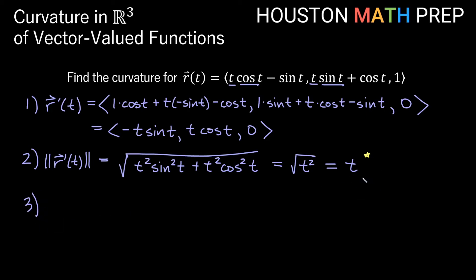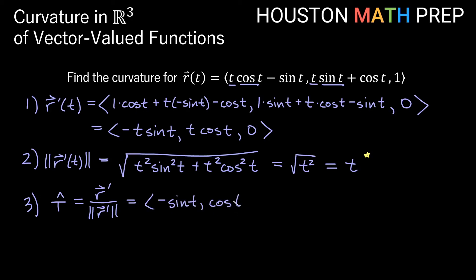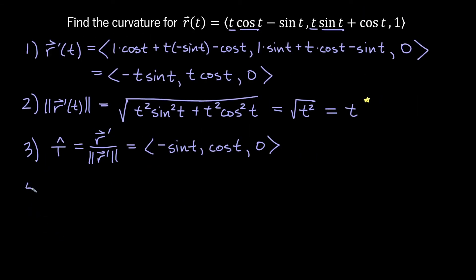If we were allowing t to be negative, we'd need the absolute value. Now for the unit tangent vector T̂, we take r-prime divided by its magnitude. Dividing each component by t just removes the t's, giving us T̂ = ⟨−sin t, cos t, 0⟩. We don't need to go all the way to the principal unit normal vector since we're just looking for curvature, but we do need T̂-prime, so that's the next step.